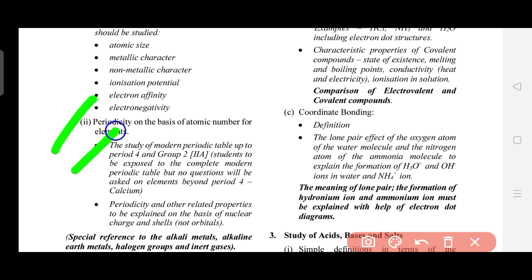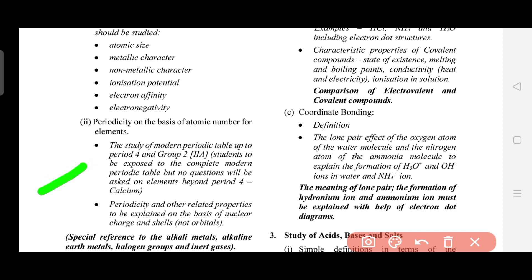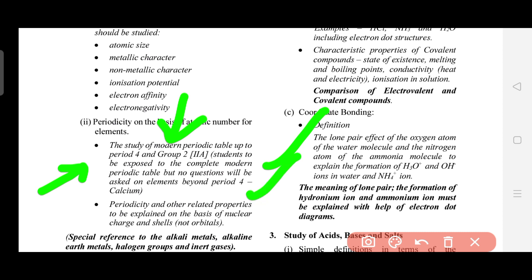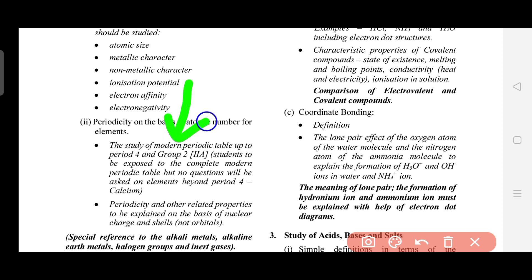One important point to note: periodicity and basis of atomic number — students need to study the Modern Periodic Table up to Period 4. There are 7 periods in total but you only need to know up to Period 4. Regarding groups, students will be exposed to the complete Modern Periodic Table but no questions will be asked on elements beyond Period 4.